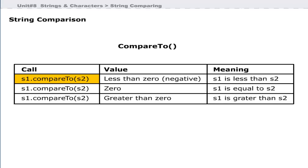When S1 is compared with S2, an integer value is returned. If the value is less than 0 (negative), then string S1 is less than S2. If the value is 0, then S1 and S2 are equal. If the return integer is greater than 0, then S1 is greater than S2.